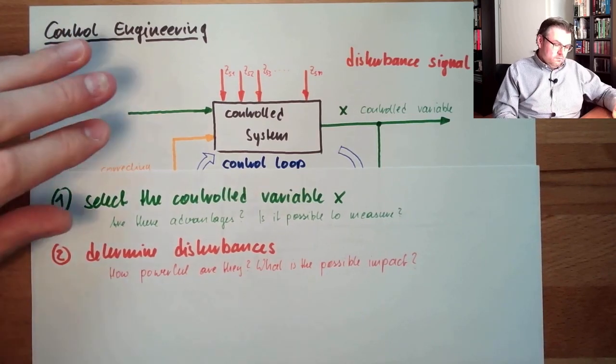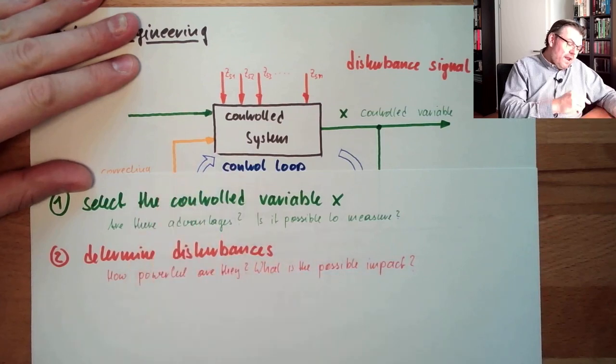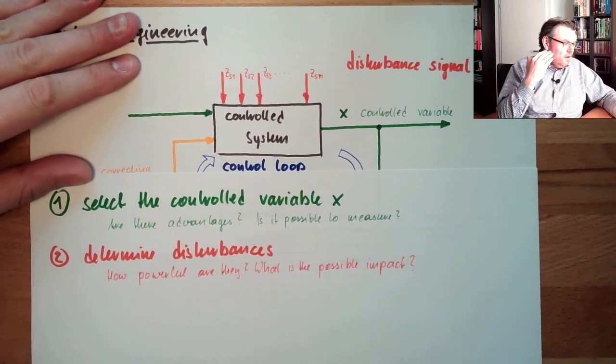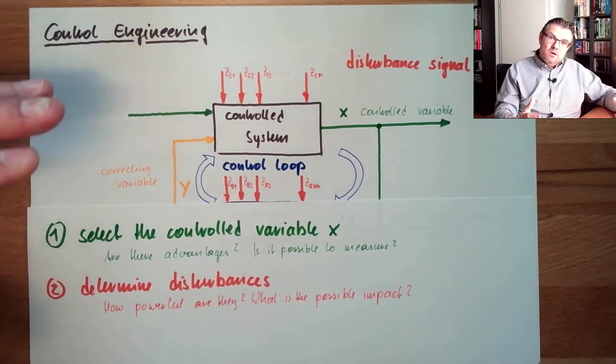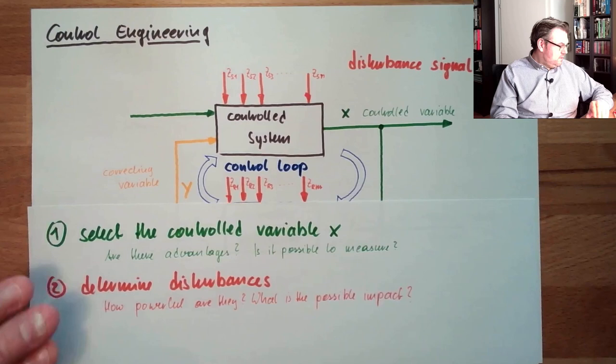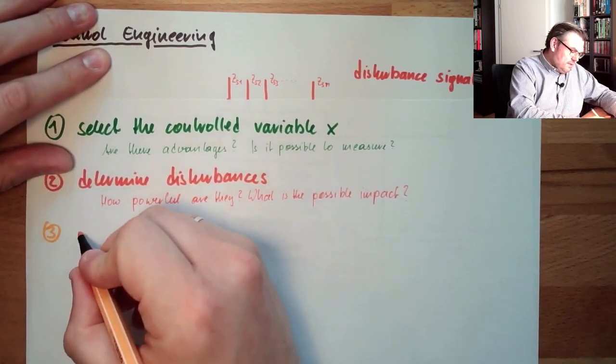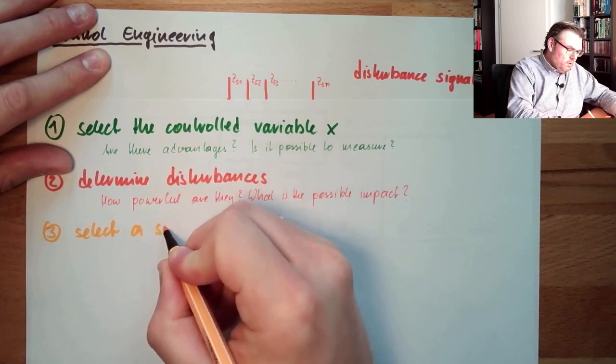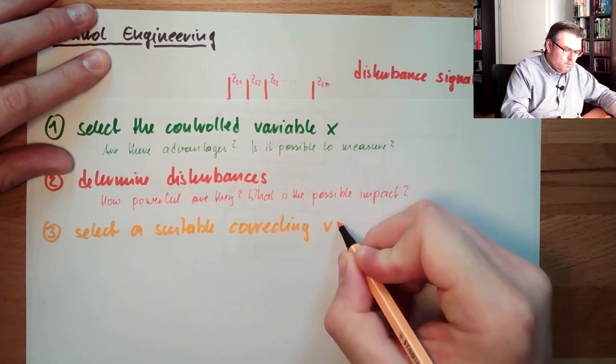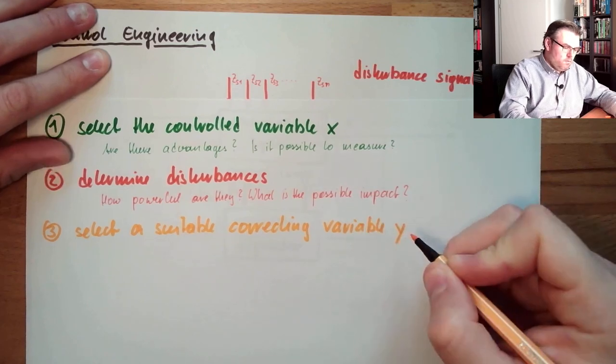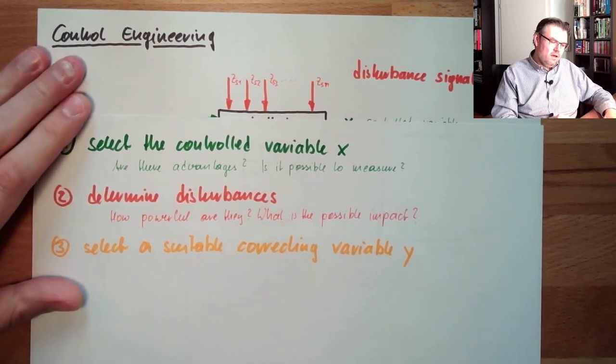And also, since I know which variable I want to control now, I also have to select somewhere an item. I have to select the correcting variable. So I now can select the correcting variable because I know which variable I want to influence. Three: select suitable correcting variable. This could I have done here also, in between, right? Not entirely true.